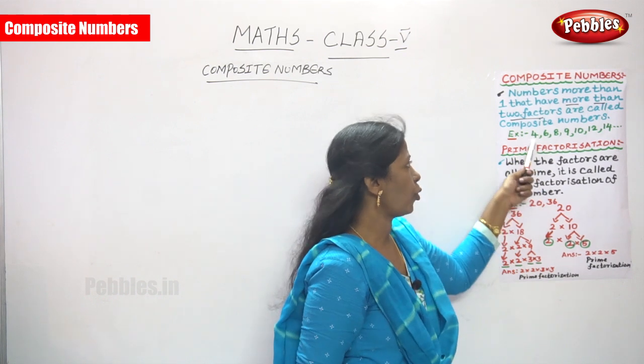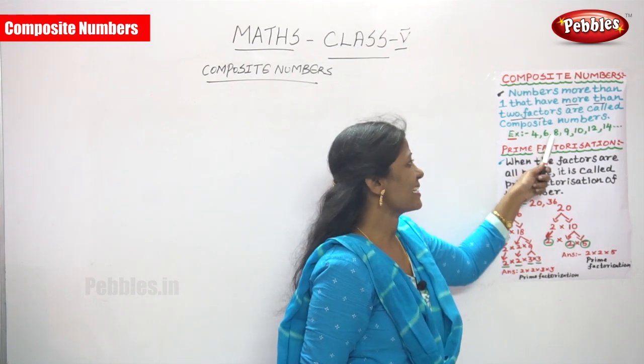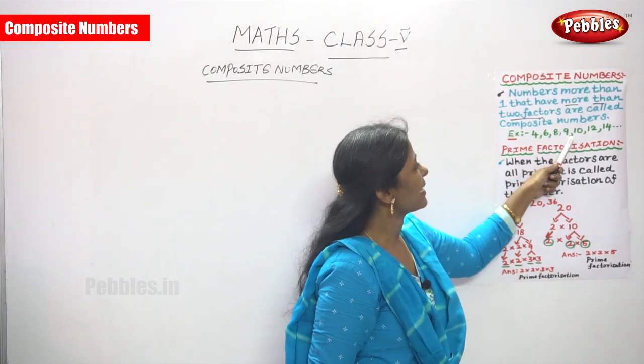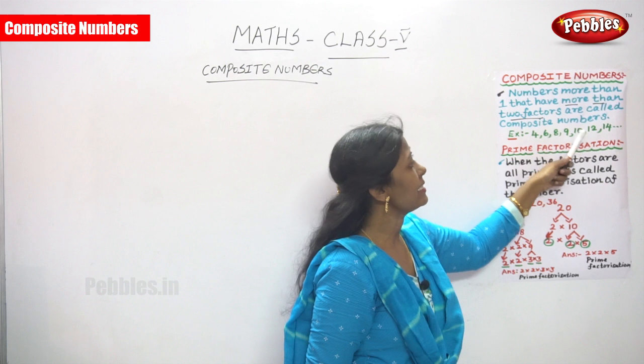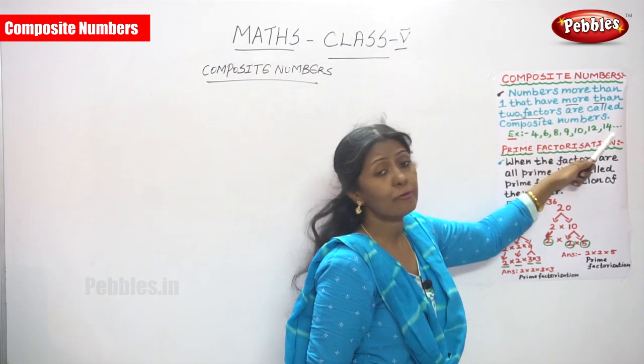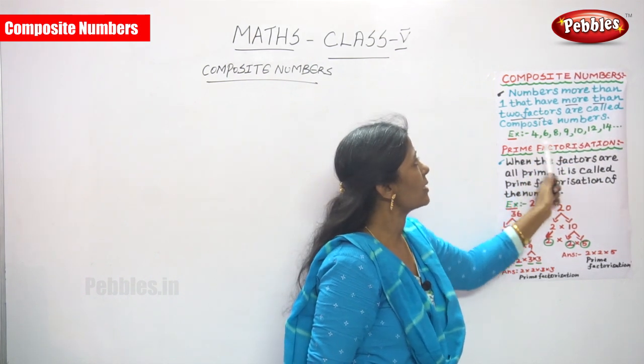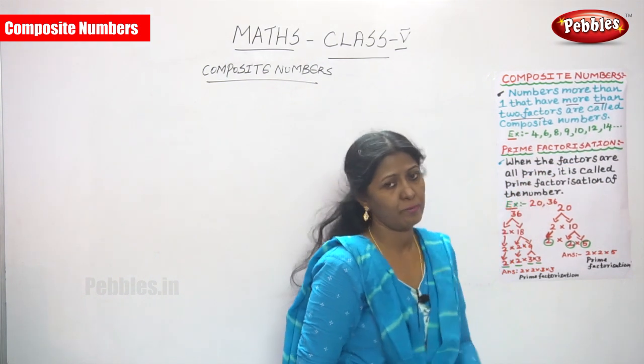Examples of composite numbers are: 4, 6, 8, 9, 10, 12, and 14. These numbers are called composite numbers.